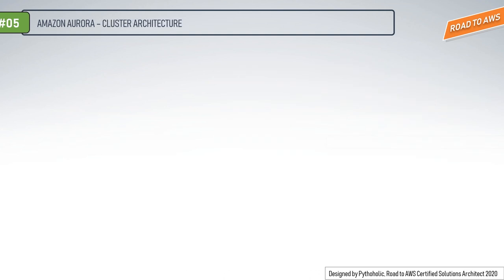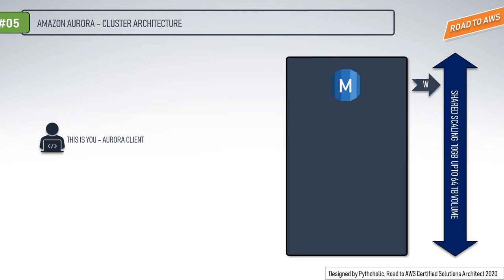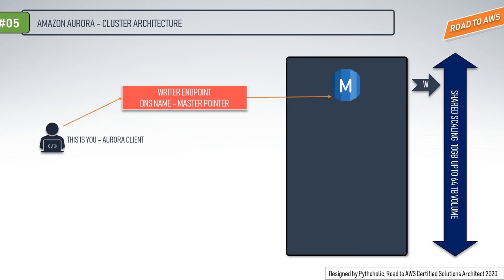Now let's discuss the architecture for the Aurora client and its interaction with the Aurora cluster. The shared volume can auto-scale from 10 GB up to 64 TB per instance. In Aurora, you get a master node or DNS which you can use to write data, but it can fail. Upon failover, the DNS changes, and AWS creates a new one to ensure write operations run smoothly. For that, RDS provides you a write endpoint — a DNS name that always points to the master even during a failover.